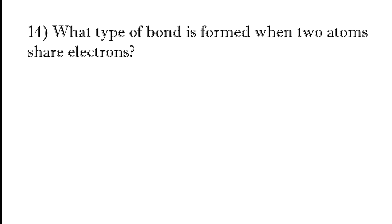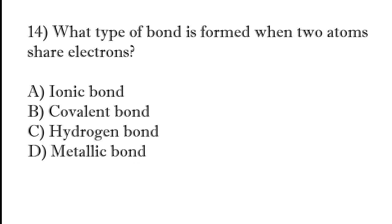Which type of bond is formed when two atoms share electrons? Ionic bond, covalent bond, hydrogen bond, or metallic bond. The correct answer is option B, covalent bond.